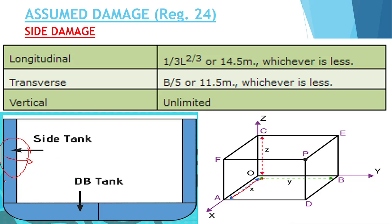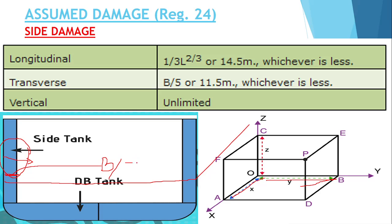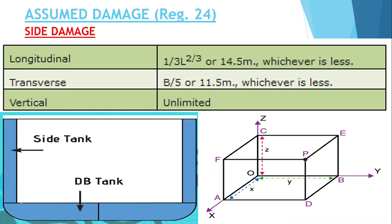If this is the breadth of the ship, the transverse damage can be taken as B/5. The vertical extent is unlimited in the upward direction. So in Regulation 24, side damage is considered three-dimensionally with these specified extents.